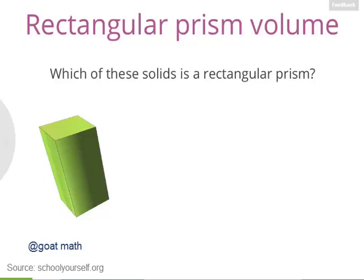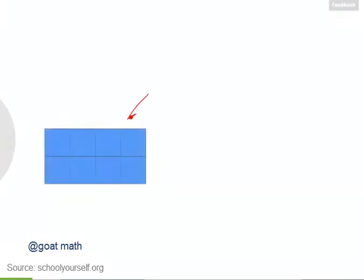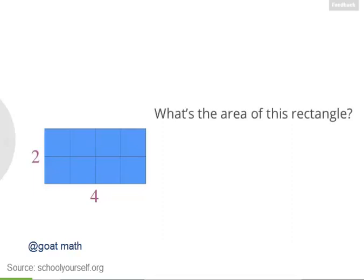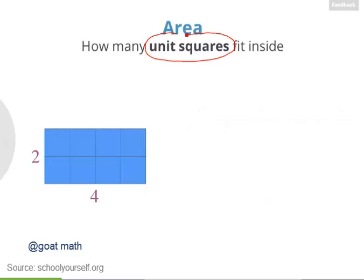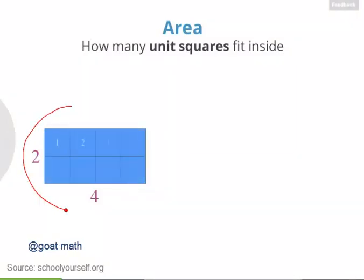Finding the volumes of rectangular prisms is a similar process to finding the areas of rectangles. Take this rectangle here for example. Suppose its base has length 4 and its height has length 2. The area of a shape is the number of unit squares that fit inside it. A unit square is a square with side length 1. This rectangle is 2 by 4, so there are 2 times 4, or 8, total unit squares here, which means the area of this rectangle is 8.